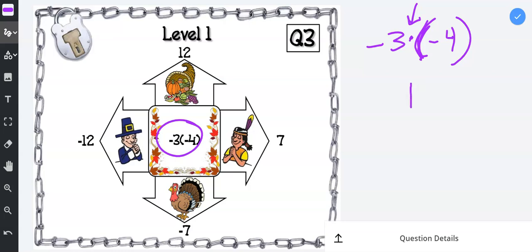3 times 4 is 12, and then you need to ask yourself, is this a negative or positive? When it comes to multiplication and division, when you have like signs, these are both negatives, you automatically get a positive result. So the answer is 12.